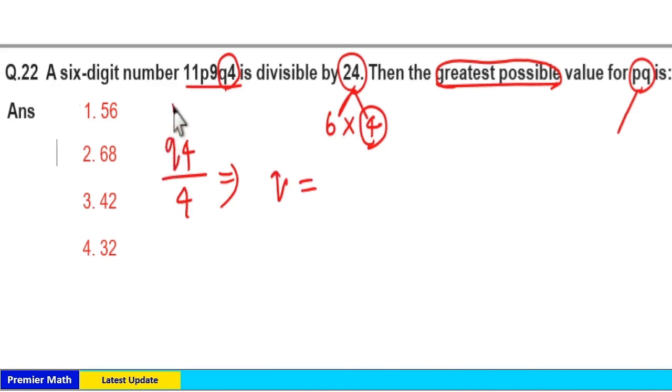Here if I put the value of Q as 9, 94 is not divisible by 4. But if I put the value of Q as 8, 84 is divisible by 4.